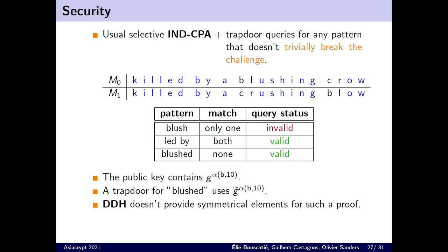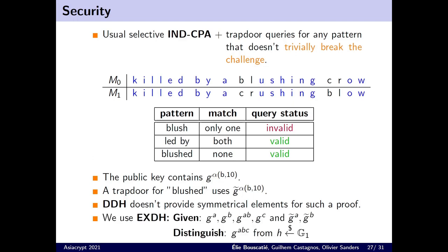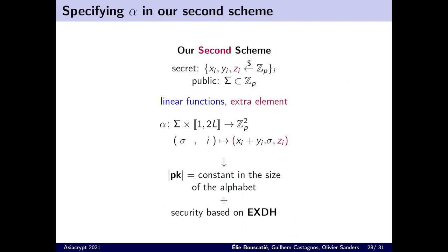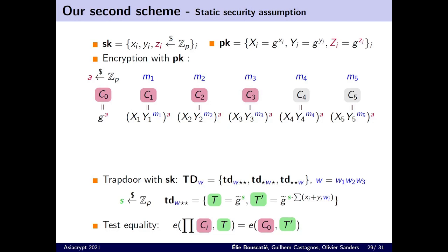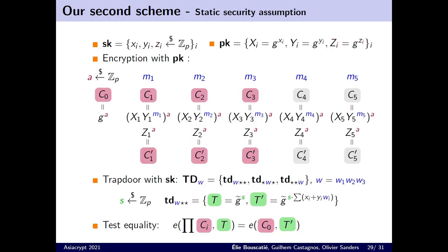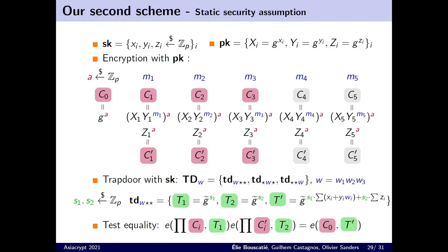We see that a classical Diffie-Hellman assumption doesn't give elements in both groups. Therefore, in our second scheme, we use EXDH, which is a natural extension of the Diffie-Hellman assumption. This extension is static, simple, and it is used in existing IBE schemes. To use all the elements of this assumption, we need more elements in our scheme. So we add some extra elements Zi in the first scheme. We add them to the public key, and they are used to make additional ciphertext elements. Now the trapdoor can be randomized with exactly two values, and the expression of T prime will have enough flexibility, yet simplicity, to show the security of this scheme based on EXDH.